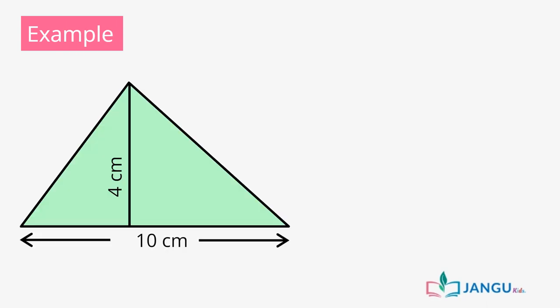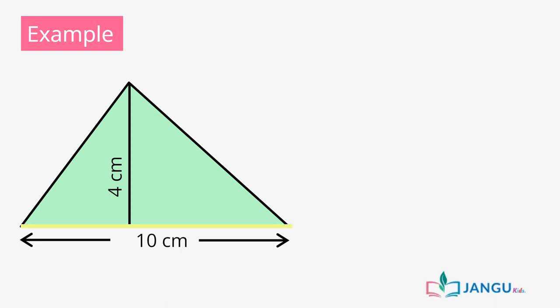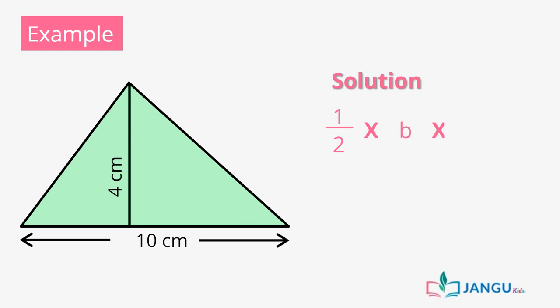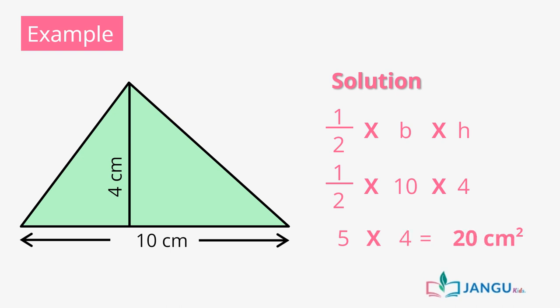Let's practice that by calculating the area of this triangle. From the image of the triangle, you can see that H, which is the perpendicular height, equals 4 centimeters, while B, which is the base length, equals 10 centimeters. We apply the formula half of B times H, which is half times 10 times 4, and when we calculate it, it will be equal to 20 centimeters squared.